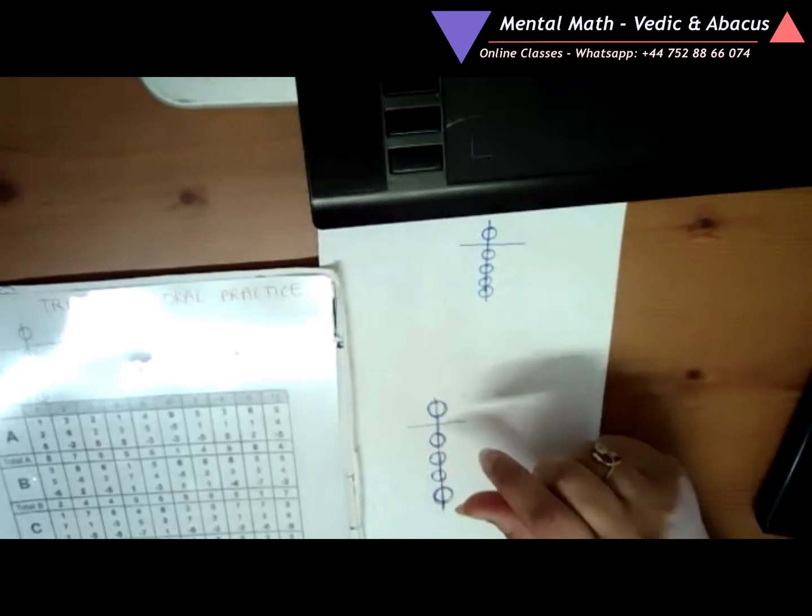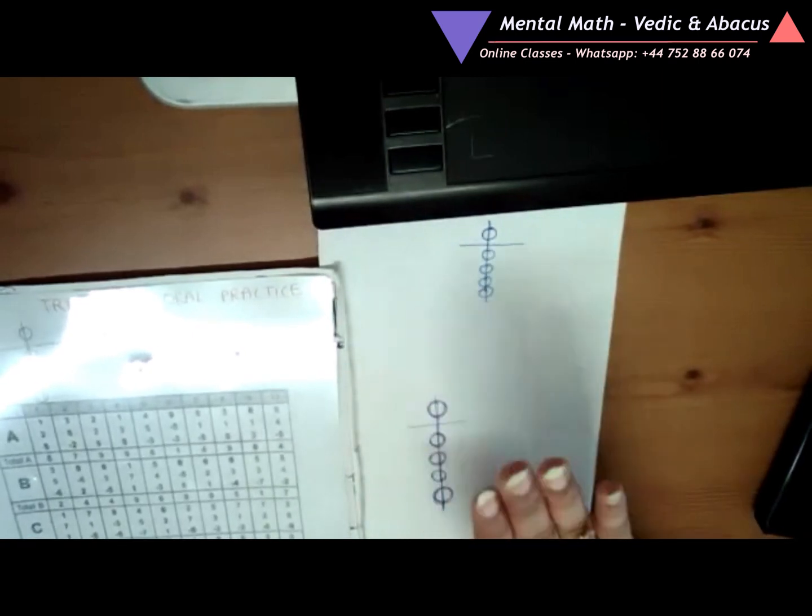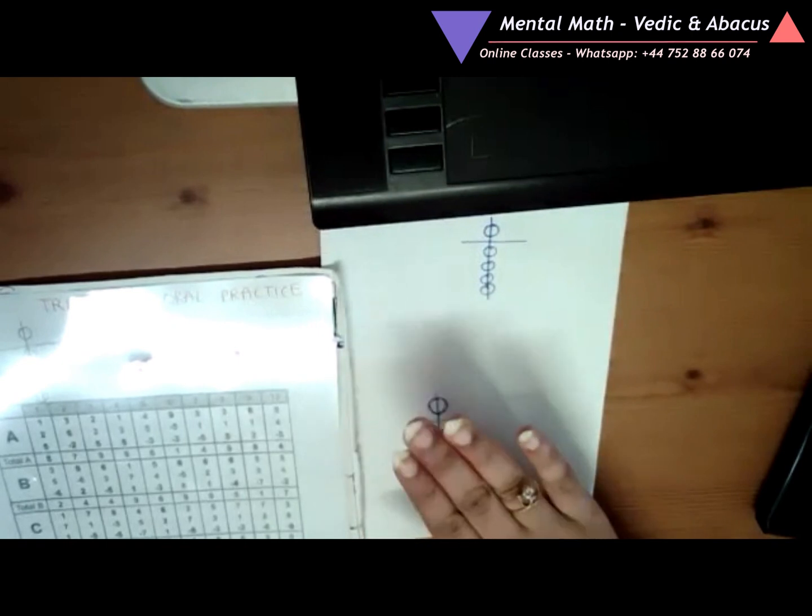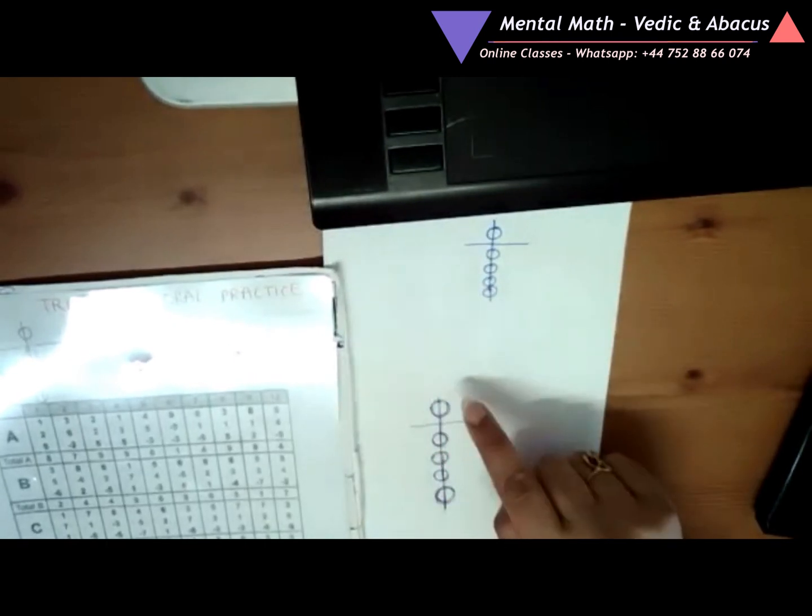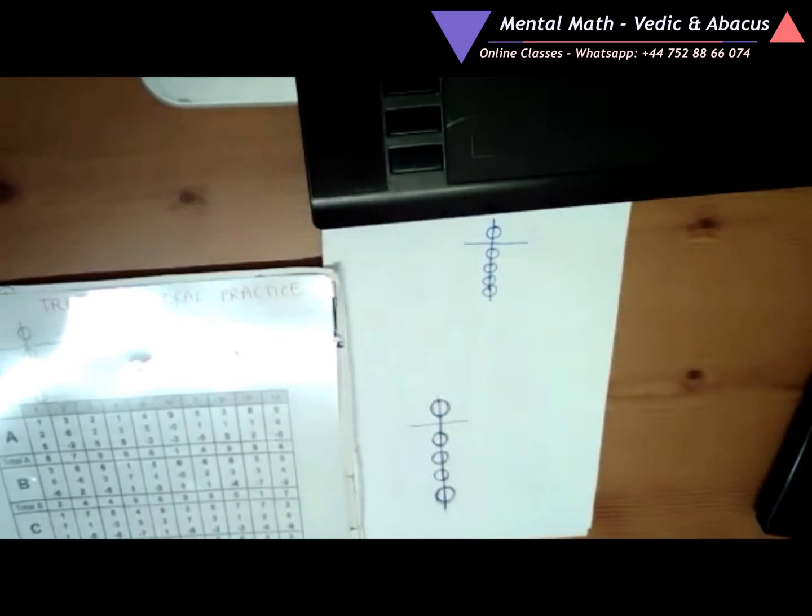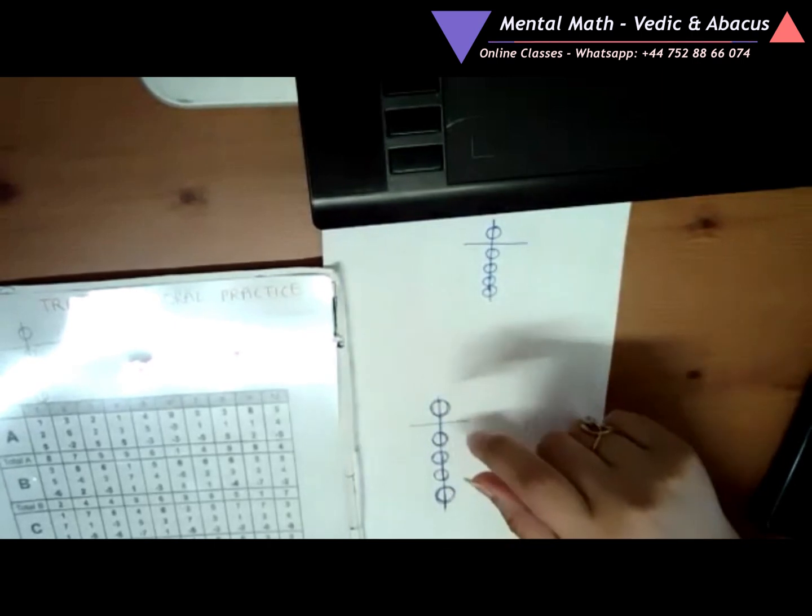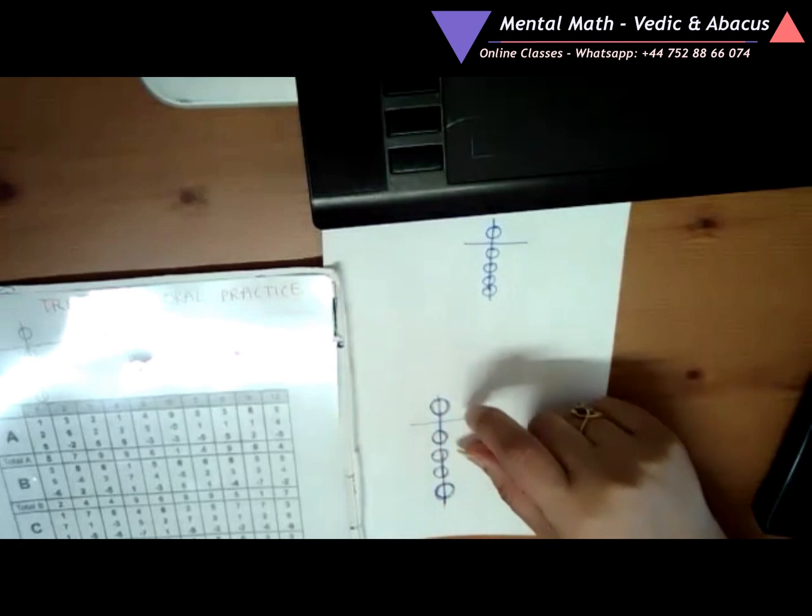Once they master the picture abacus skills, then we will move to the mental abacus, where they will imagine this picture, this rod, in their mind, and they will do everything in their head without actually using the picture or the tool. I hope this is clear now.